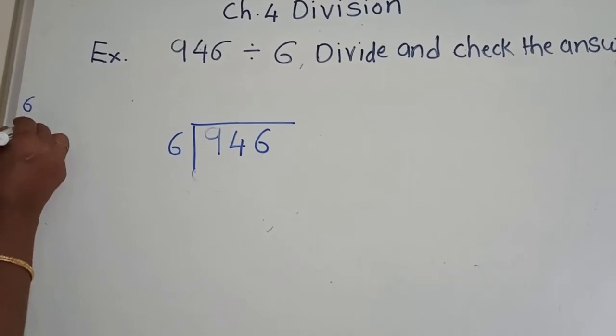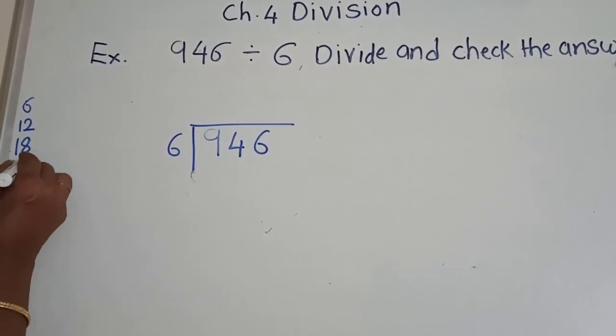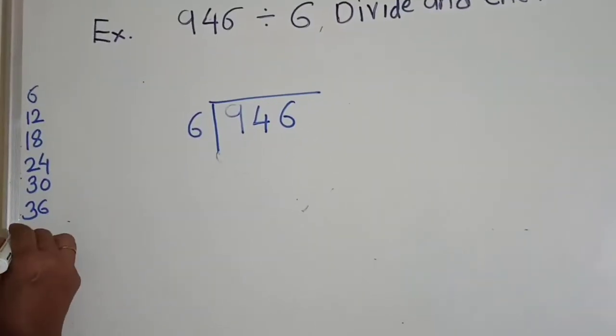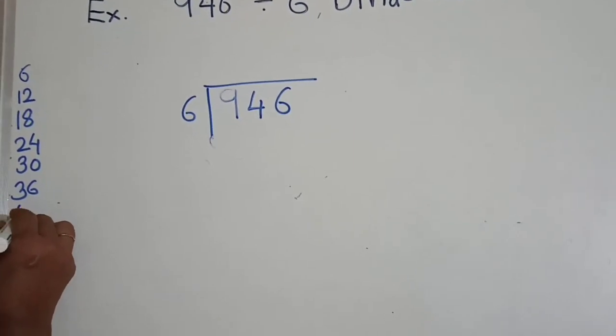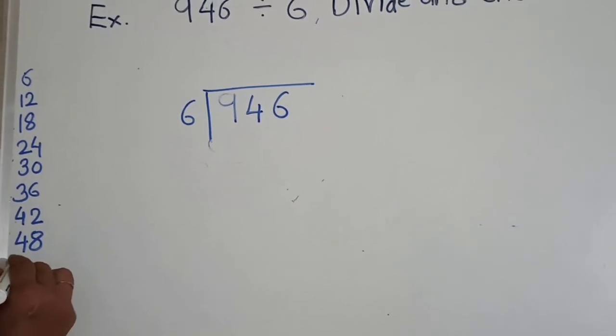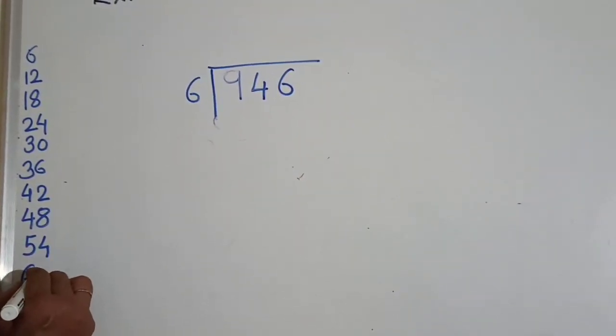6 1s are 6, 6 2s are 12, 6 3s are 18, 6 4s are 24, 6 5s are 30, 6 6s are 36, 6 7s are 42, 6 8s are 48, 6 9s are 54, and 6 10s are 60.